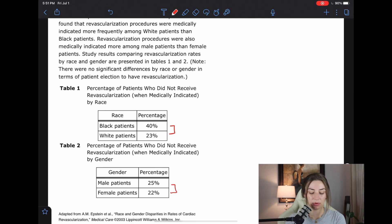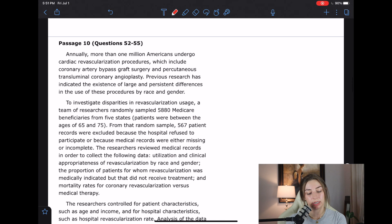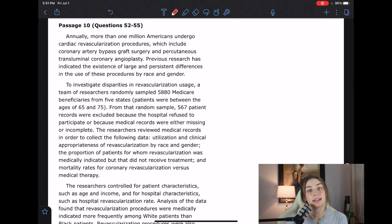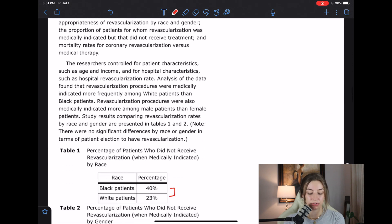Table two says percentage of patients who did not receive revascularization when medically indicated by gender. And I don't know if that's going to be considered significant. Okay. So I didn't end up flow charting anything. I'm sorry. I didn't see anything that needed flow charting. Psych social does this to me.